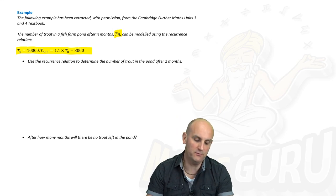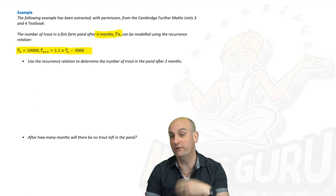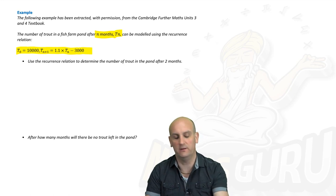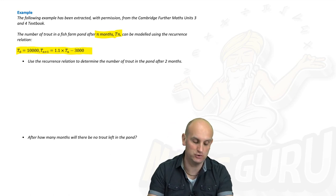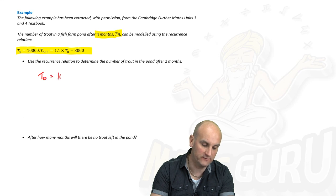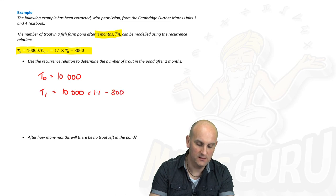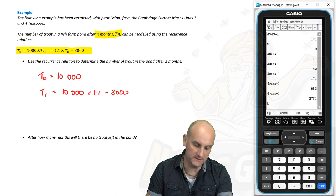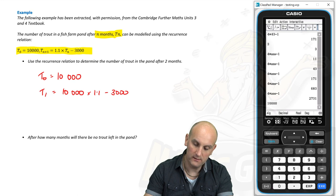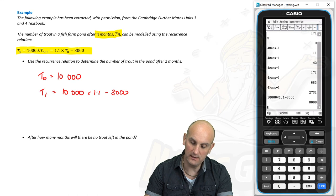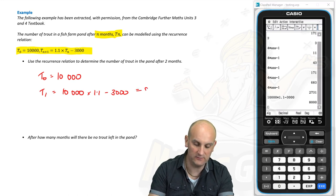Use the recurrence relation to determine the number of trout in the pond after two months. So n stands for the number of months and that's really important here. So after two months we are looking for T_2. So we have T_0, it was given as 10,000. So T_1 is going to be given by 10,000 × 1.1 minus 3,000. So 10,000 multiplied by 1.1 and subtract from that 3,000. Hit equal, 8,000. So T_1 = 8,000.